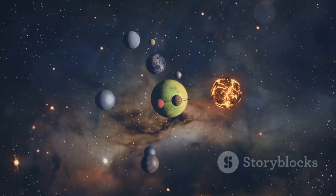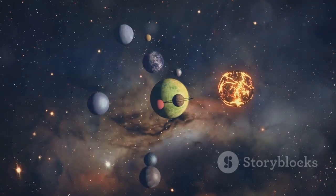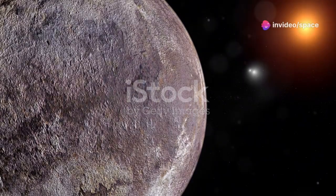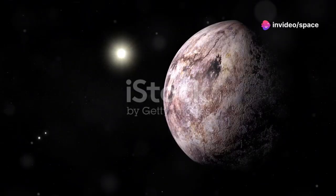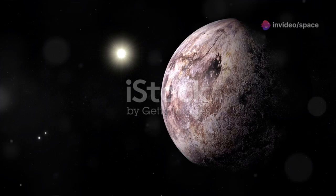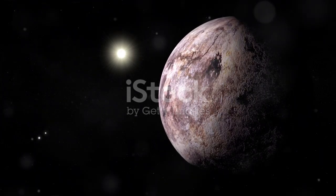Proxima b is an exoplanet, that means it orbits a star outside of our solar system. But what makes this planet particularly special is its proximity to us. At just over 4 light years away, Proxima b is our closest known exoplanetary neighbor.